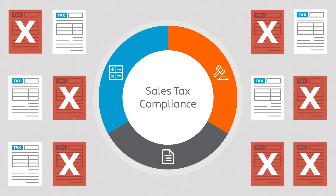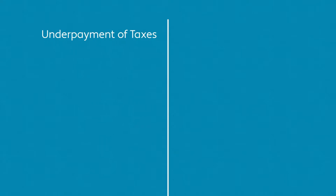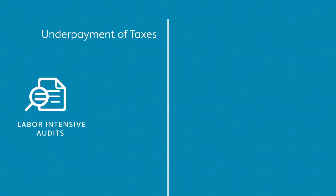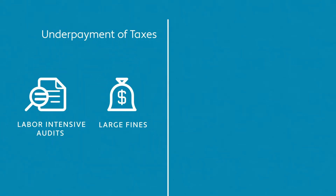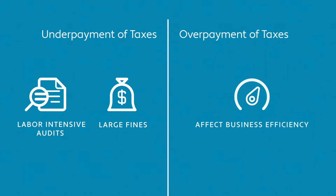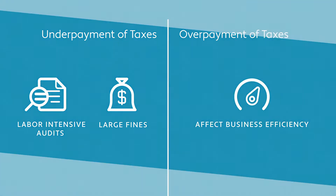When mistakes happen, companies may remit the incorrect amount of tax. This poses a problem because underpayment of taxes can lead to labor-intensive audits and large fines, while overpayment can affect business efficiency through mismanaged resources.